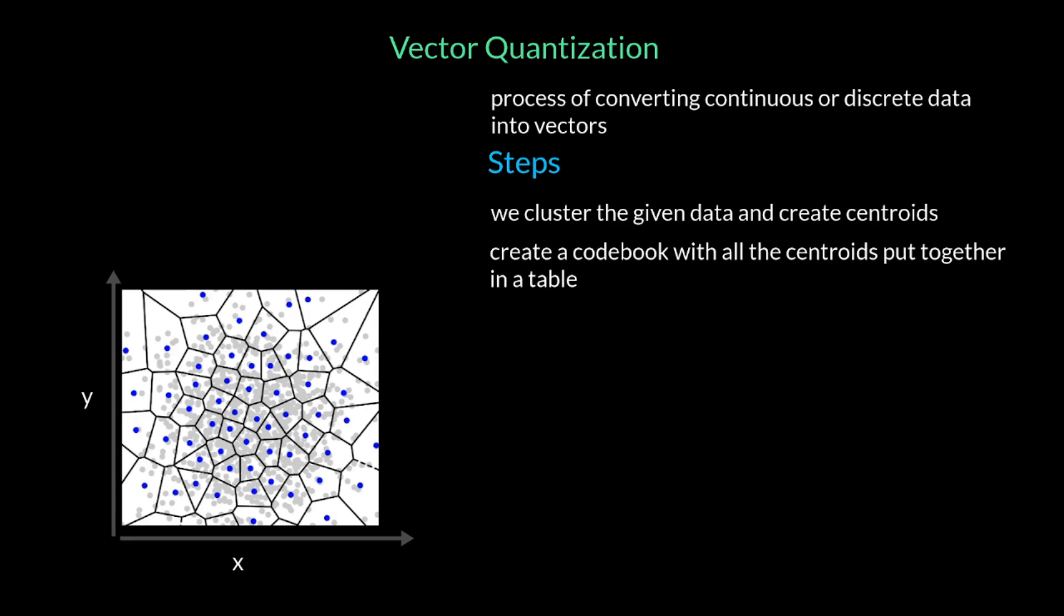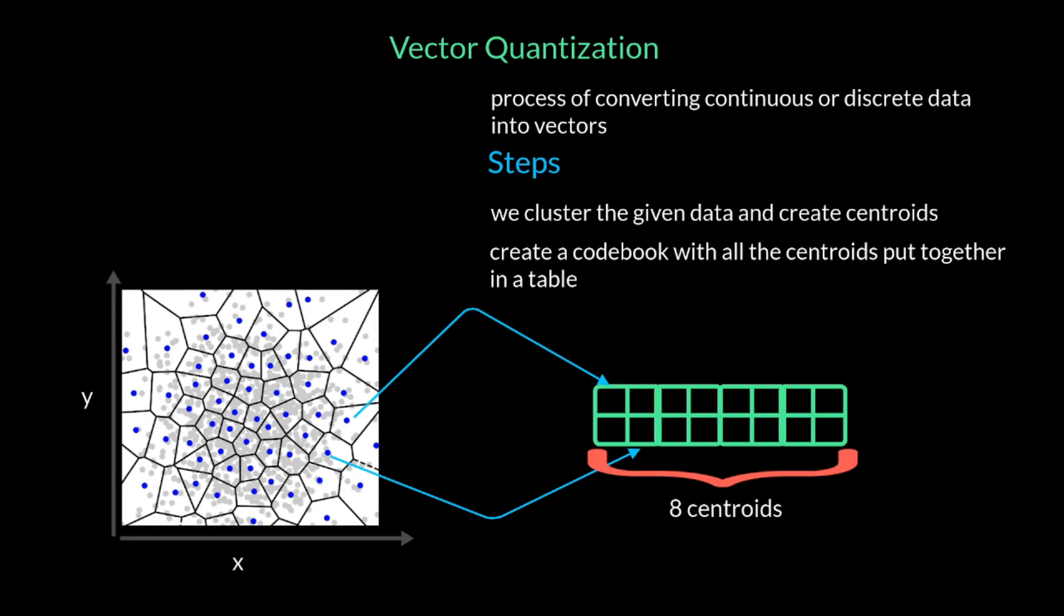We can now put together all these centroids in a table, and this resulting table is called a codebook. Needless to say, the more the centroids, the larger the table has to be to capture all the centroid values. Now, in this toy example, let's say we have eight centroids. The number of bits needed to uniquely represent eight centroids is three, as two power three is eight. So, we at least need three bits per second budget to compress this two-dimensional data with eight centroids.